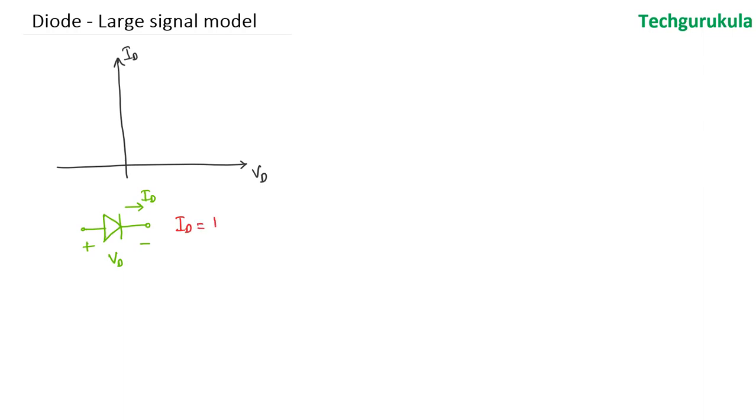The current flowing through the diode to the voltage relationship, we have the diode current equation which is ID is equal to I0 times e power VD over eta VT minus 1, where eta will be in the range of 1 and 2.